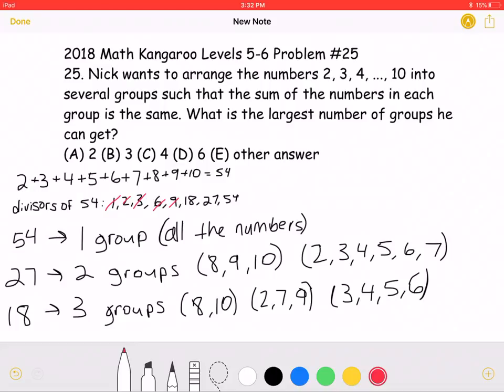Therefore, the largest number of groups he can get is three groups, where the sum of the numbers in each group is 18.